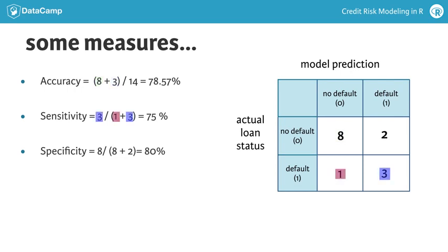The sensitivity is a percentage of bad customers that are classified correctly, or 75% in this example. The specificity is a percentage of good customers that are classified correctly, or 80% in this example.